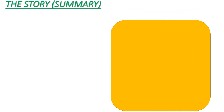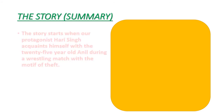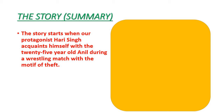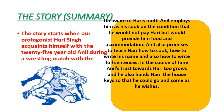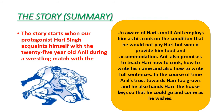Let us start with the story summary. The story starts when the protagonist Hari Singh acquaints himself with a 25-year-old Anil during a wrestling match. Unaware of Hari's motive, Anil employs him as his cook on the condition that he would not pay Hari but would provide him food and accommodation. Anil also promises to teach Hari how to cook, how to write his name, and also how to write full sentences. In the course of time, Anil's trust towards Hari grows and he hands Hari the house keys so that he could come and go as he wishes.